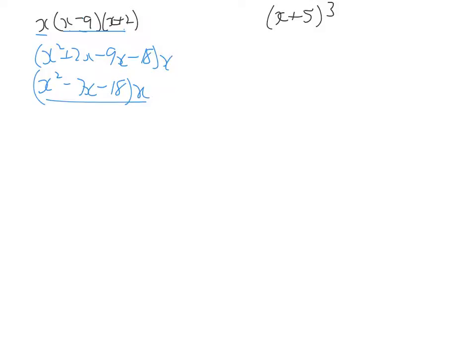So now we multiply all this out. We've got x cubed minus 7x squared minus 18x.